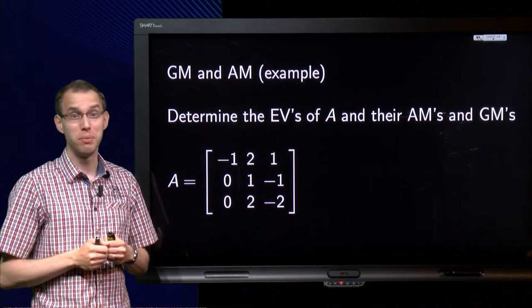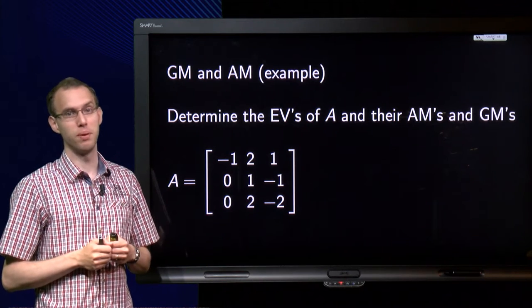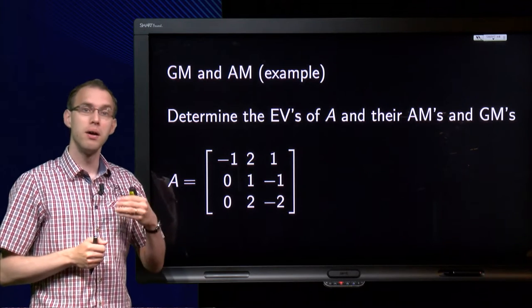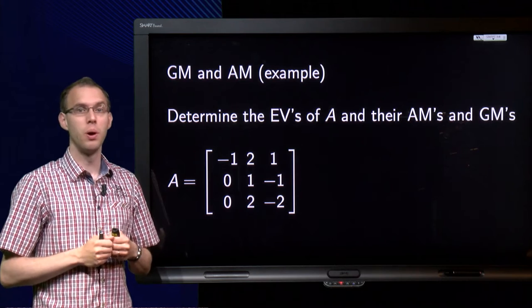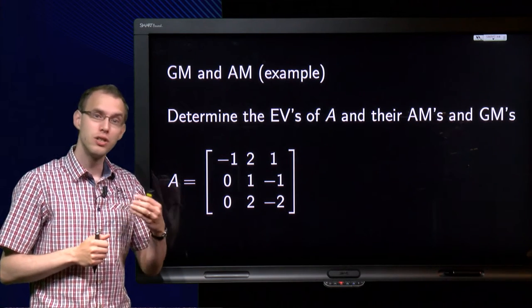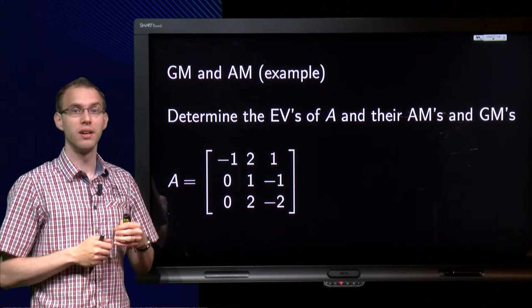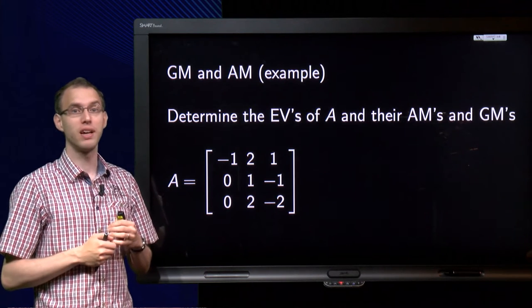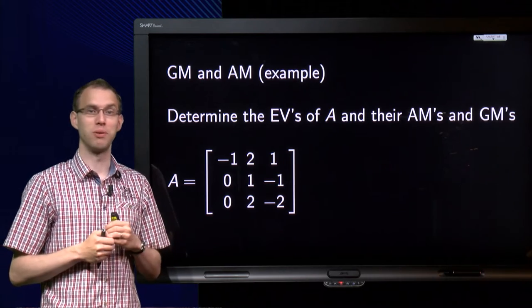We have learned what a geometric multiplicity is, and you know that we can use this to determine whether a matrix is diagonalizable or not. But how does this work in an explicit example? Well, sometimes this can be quite a lot of work, but sometimes you are lucky and you can deduce this straight away. In the following example we will see both cases, let's have a look.